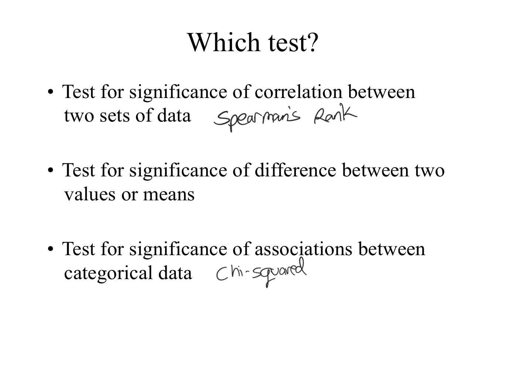For the last test — significance of difference between two means — where one mean is higher than the other, the question is: could that difference be due to chance, or is it due to a significant reason? This final test is what we mean by the student's t-test.